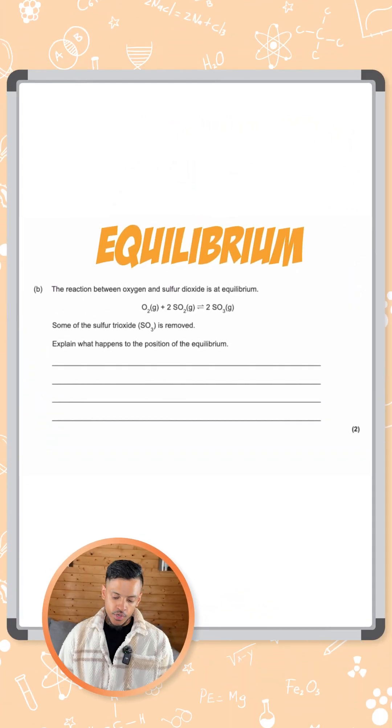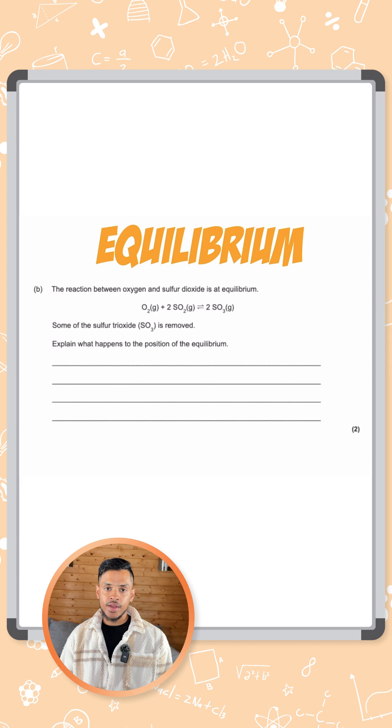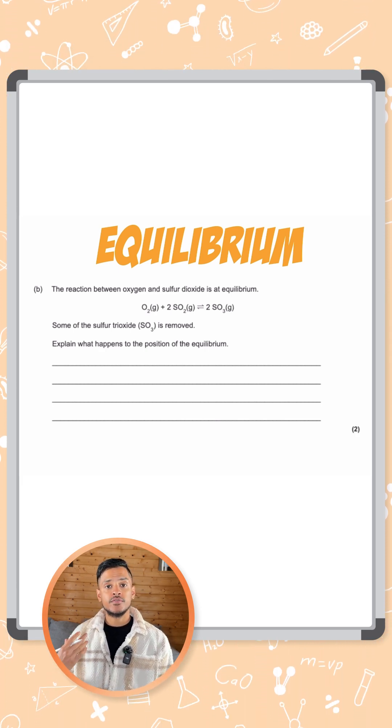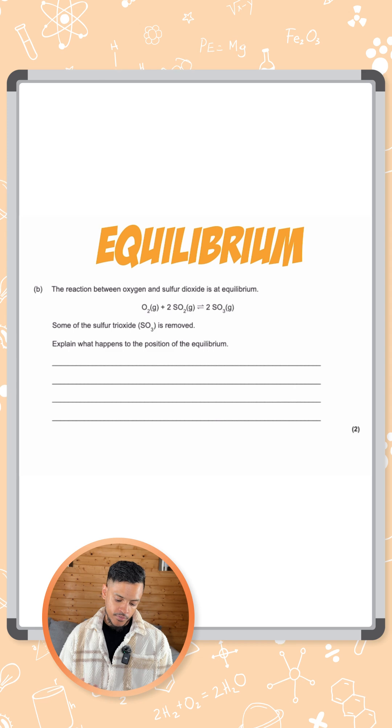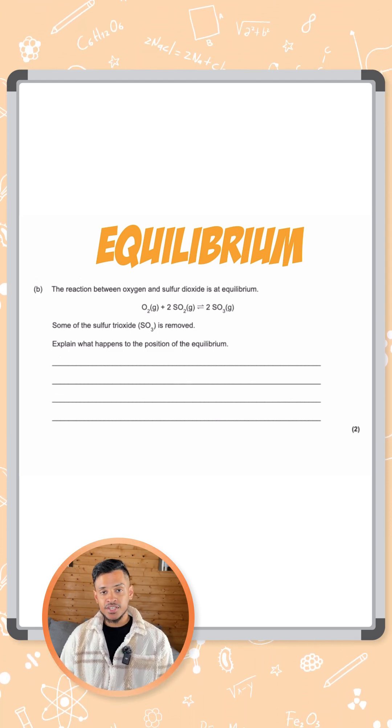Question on equilibrium here. The reaction between oxygen and sulfur dioxide is at equilibrium. Oxygen plus sulfur dioxide is forming SO3, which is sulfur trioxide. Some of the sulfur trioxide is removed. Explain what happens to the position of equilibrium.